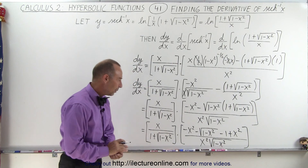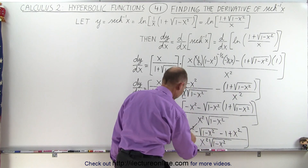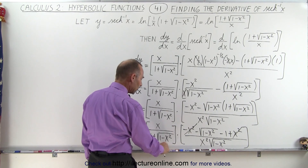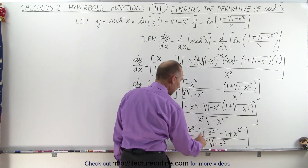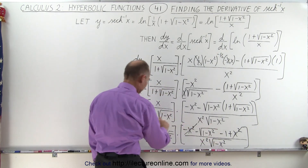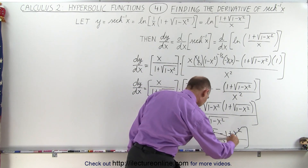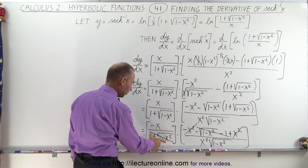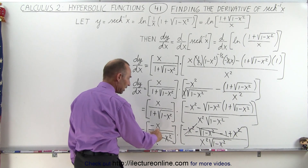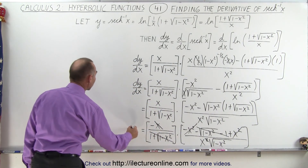Now we're in good shape. The minus x squared and the plus x squared cancel out. We also have 1 plus the square root of 1 minus x squared out front, and here we have minus 1 minus the square root of 1 minus x squared — so taking the negative sign across, this whole factor cancels. What's left is 1 in the numerator, and the x out front cancels with x squared in the denominator, leaving just x.